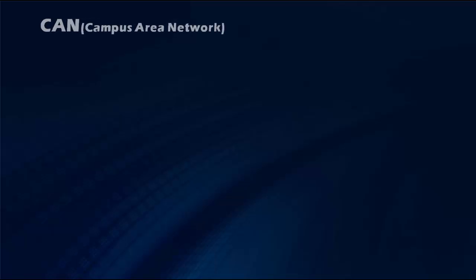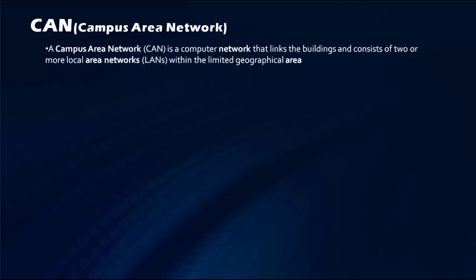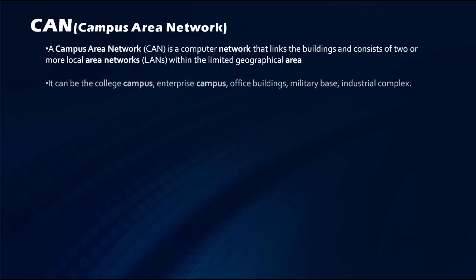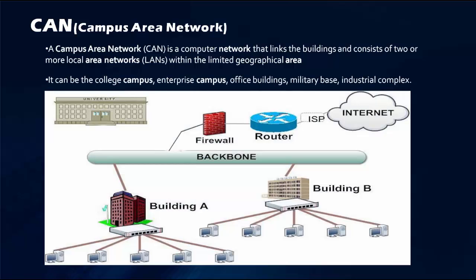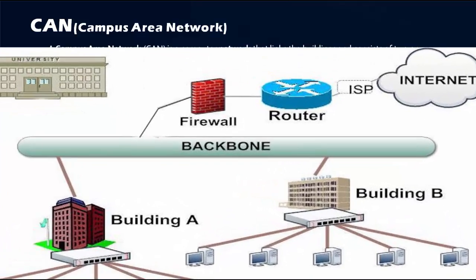We are also discussing another type of network, and that is CAN. CAN and MAN are almost the same. CAN stands for Campus Area Network. A Campus Area Network is a computer network that links buildings and consists of two or more local area networks within a limited geographical area, just like MAN. It can be a college campus, enterprise campus, office buildings, military base, or industrial complex.